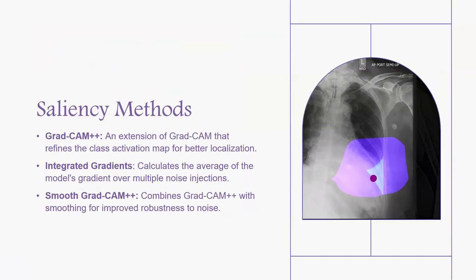Grad-CAM++ refines the class activation map by incorporating channel-wise importance weights, leading to potentially more precise localization. Integrated Gradients computes the average of the model's gradients with respect to the input image over multiple noise injections, aiming at achieving a smoother and more robust saliency map. Finally, Smooth Grad-CAM++ combines the smoothing technique with the channel importance weights of Grad-CAM++, potentially leading to improved robustness and accuracy.